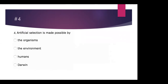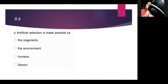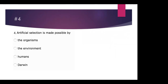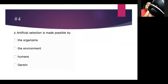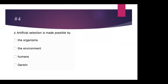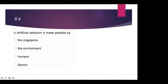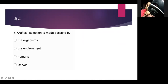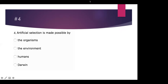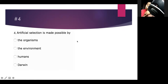Artificial selection is made possible by organisms, the environment, humans, or Darwin. So if I'm typically manipulating what's happening, it's not the environment — it's humans.